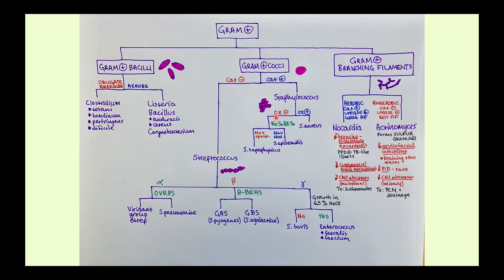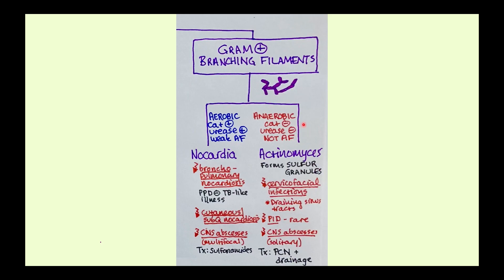As we go through, we're going to look at our algorithm, talk about the major disease that actinomyces causes, and then finish up with a story. The major species of actinomyces — the one I want you to keep in mind — is actinomyces israelii. Here's our algorithm with the gram-positive branching filaments blown up, and I want you to pay special attention to the differentiating factors between nocardia and actinomyces, because this is likely how they're going to ask you on the test. They'll give you a patient with a certain disease process, and you'll know it's nocardia or actinomyces because they cause very different diseases.